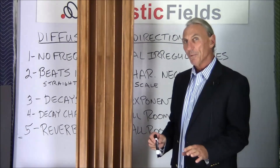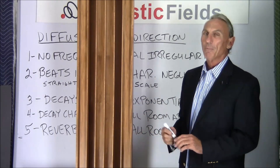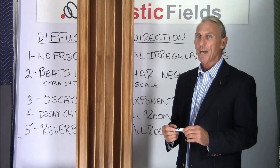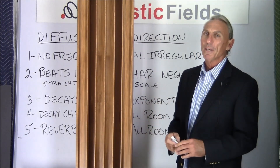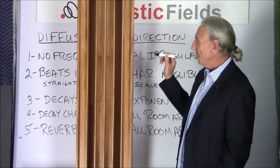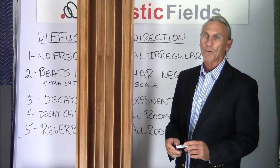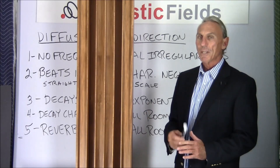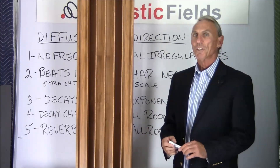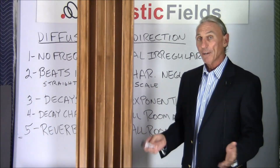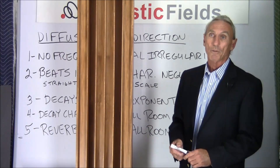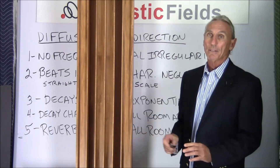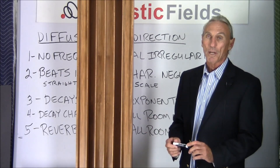A sound redirection device placed next to another in a room doesn't provide much diffusion, and redirection itself is limited even below 300 cycles. So they're limited in bandwidth, and the basic way they perform is limiting. It's difficult with a sound redirection device to achieve a true diffused sound field because of the nature of the elements. Manufacturers call them sound diffusers because they want you to believe they have a diffuser, but technically they don't — they can't satisfy those five conditions.